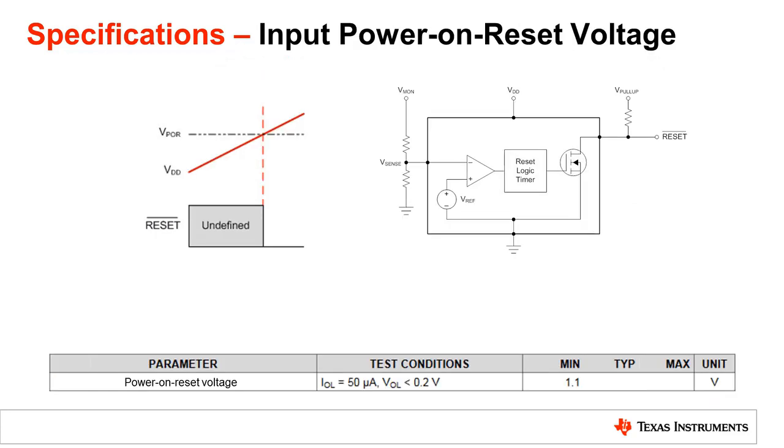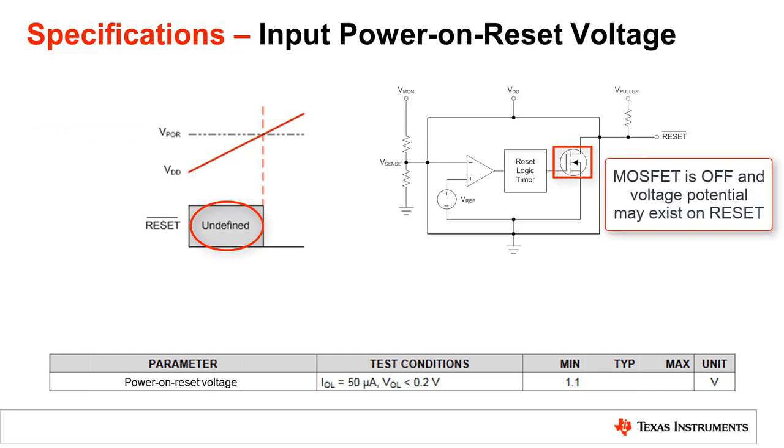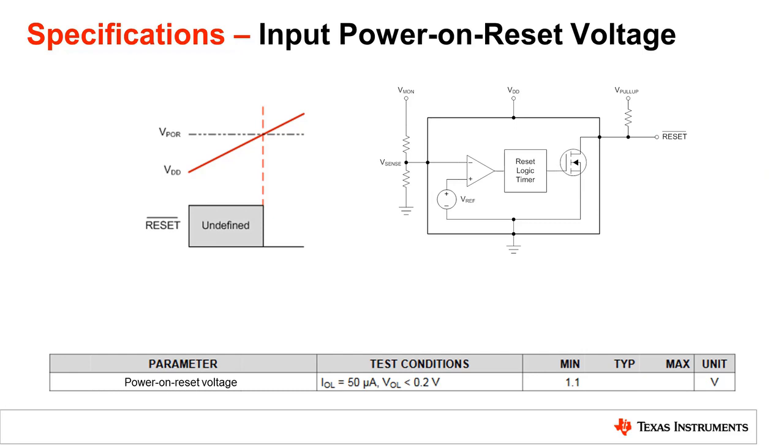Our final input specification to consider is the power on reset voltage. When the supervisor first powers up and VDD begins rising from 0 volts, the supervisor output will be at an undefined state. This is because the internal output MOSFET is off and the supervisor has no way to control the internal circuitry that's pulling the output low. As a result, the output could exhibit a small amount of voltage, where ideally it should have no voltage potential. The voltage level up to which this effect can be observed is called the power on reset voltage or VPOR. The specifications of VPOR is defined in the parametric table of the datasheet as shown. In the example above, when VDD begins rising, the output of the supervisor is in an undefined state. Once VDD surpasses the VPOR of 1.1 volts, the internal output MOSFET will turn on and properly pull the output low.